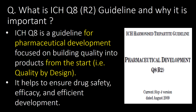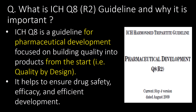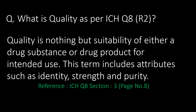Welcome. We will start with some basic questions and then go into detail. First question: what is ICH Q8 R2 guideline and why is it important? The ICH Q8 is a guideline for pharmaceutical development focused on building quality into products from the start — that is, quality by design. It helps to ensure drug safety, efficacy, and efficient development.